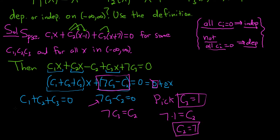And then if you come over here, we'll get c₁ + c₂, which is 7, plus c₃, which is 1, and that's equal to zero. So c₁ + 8 = 0. So that means that c₁ = -8. Boom. We have c's, and they are not all zero.